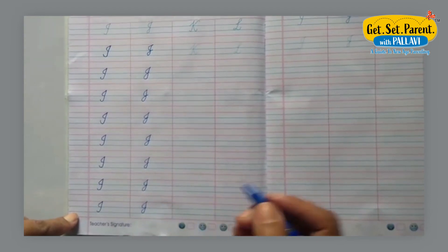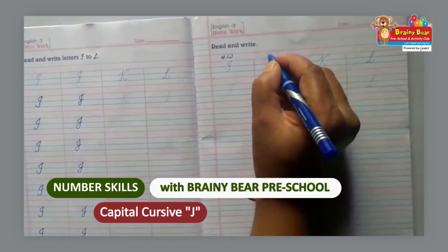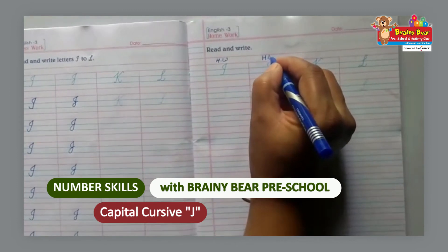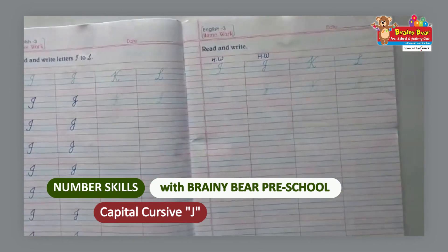This is Cursive J. And on page number 13, this is your homework. Okay kids, bye bye.